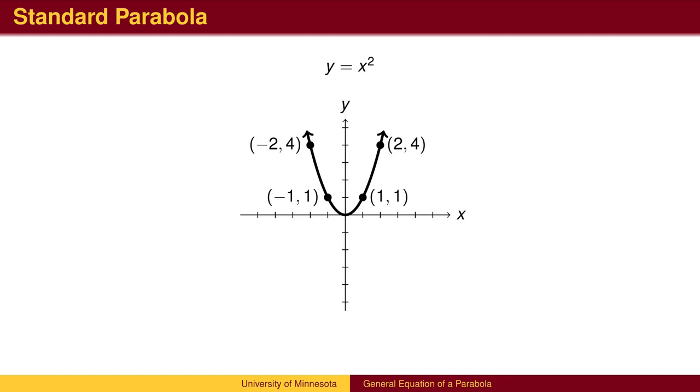We can now perform the standard transformations of graphs. First, we can reflect the graph across the x-axis by placing a negative in front of the x-squared. The red parabola has negative values for the y-coordinates.